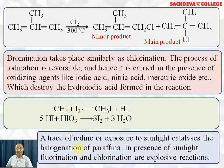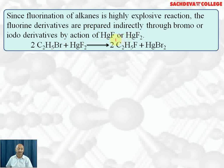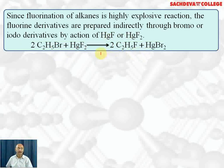A trace of iodine or exposure to sunlight catalyzes the halogenation of alkanes. In presence of sunlight, fluorination and chlorination are explosive reactions — especially fluorination is extremely fast and explosive. Therefore, fluorine derivatives are prepared indirectly through bromo or hydro derivatives using HgF, HgF₂, or AgF. This reaction is called the Swartz reaction. For example, ethyl bromide reacts with mercuric fluoride to form fluoroethane plus mercuric bromide.